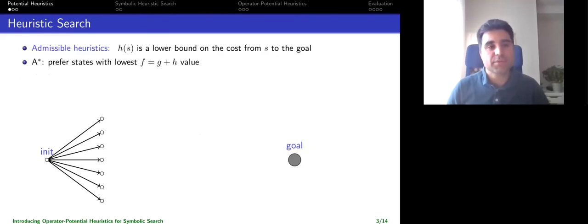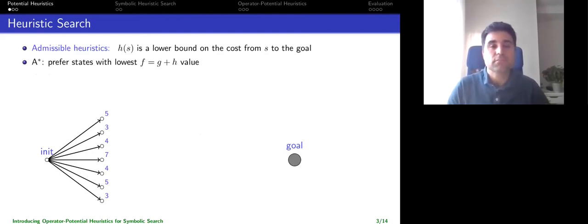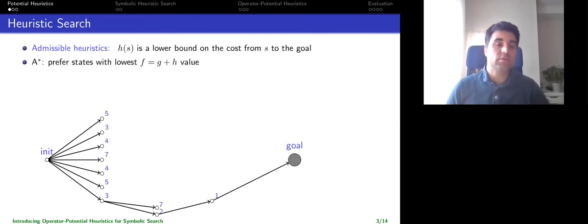So let's start with heuristic search. In heuristic search we start from the initial state, generate a bunch of successor states, and then compute a heuristic value for each state, which is just an estimate of the goal distance from that state. We want admissible heuristics that never overestimate the real distance, because we can use them in A* search to find optimal solutions, while the heuristic guides the search towards the goal so that we don't need to explore all possibilities.